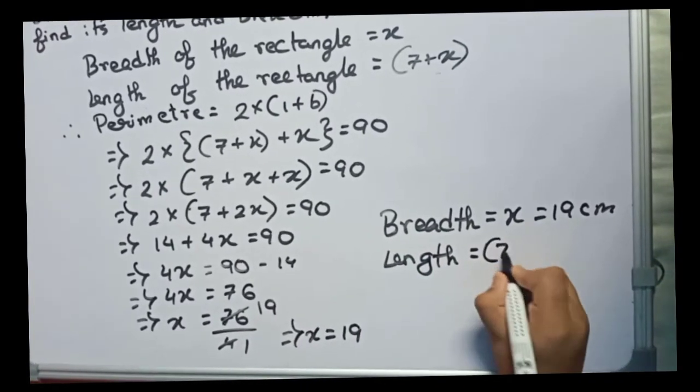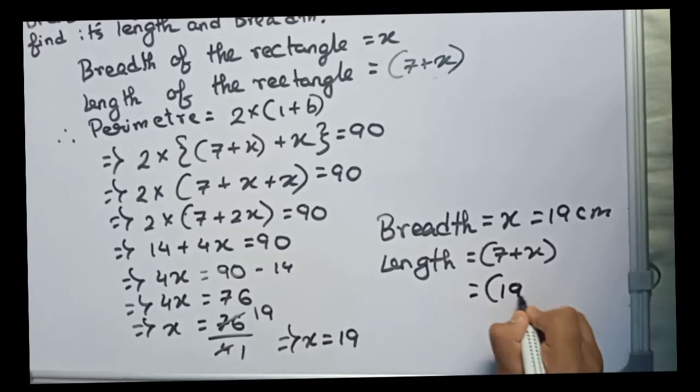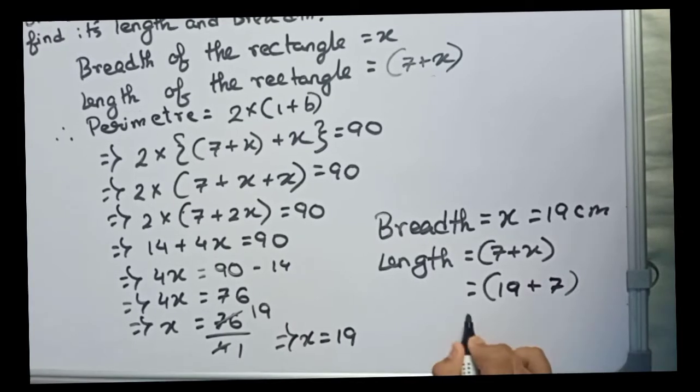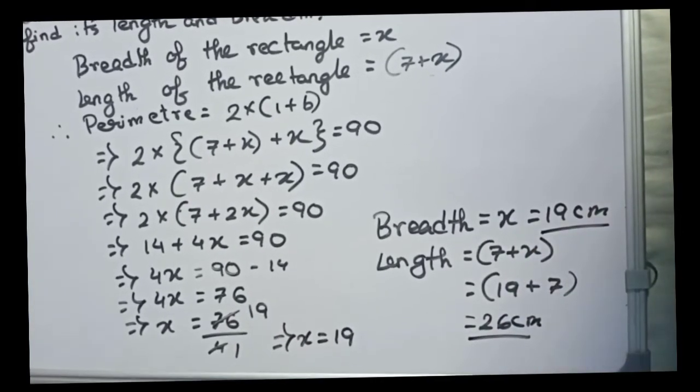Equals 7 plus x. It is 7 plus x, and therefore it will become 19 plus 7, that is 26 centimeters. So these are our final answer.